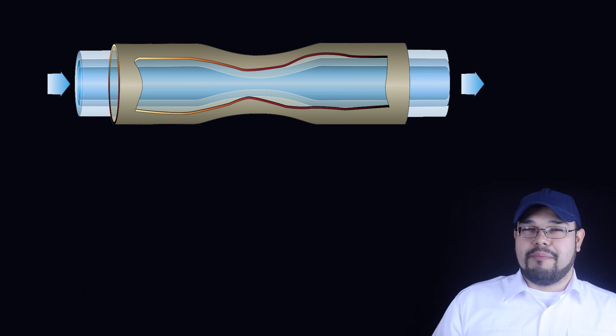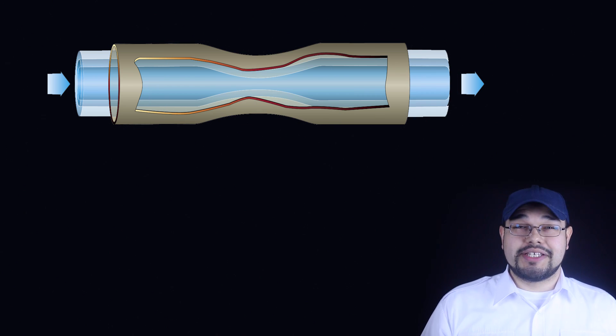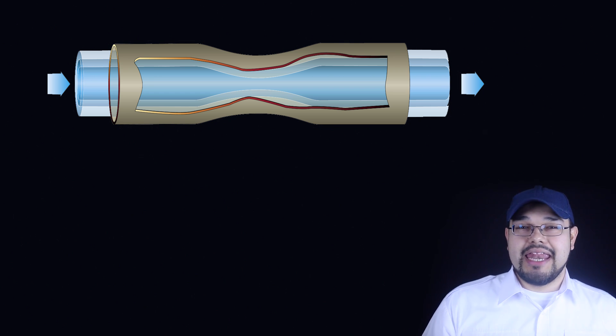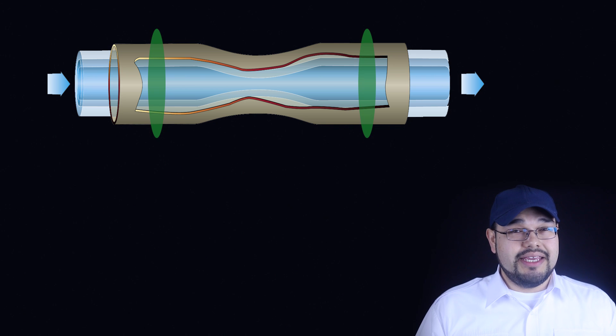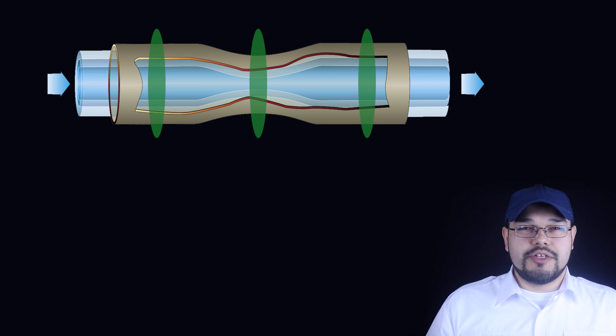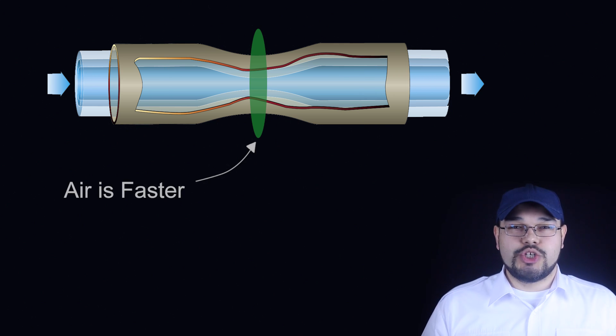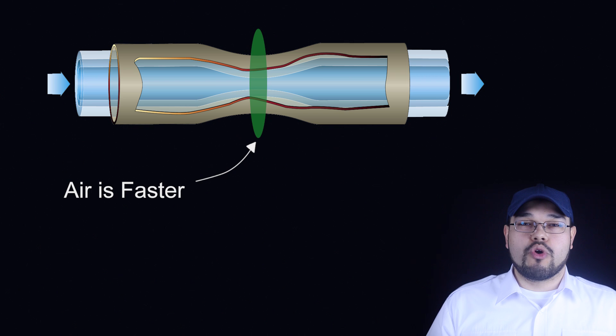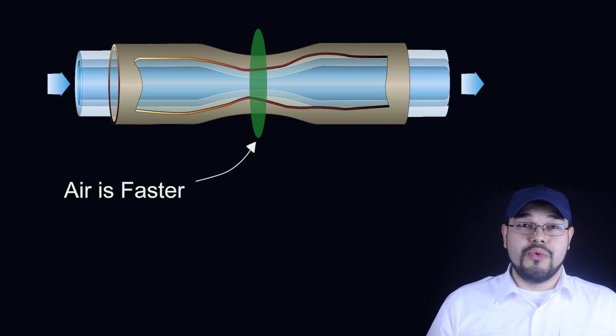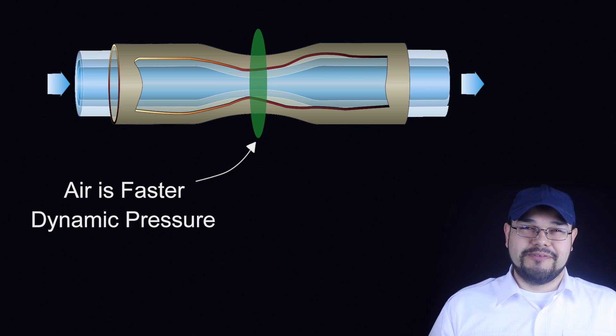Now let's squeeze the middle of the pipe. Well guess what? Still at every cross section in the pipe, we have the same amount of air passing through it at any moment in time. Same amount of air passing through here, as here, and same amount even here. So for there to be the same amount of air passing through here in a moment in time, the air must be and is traveling faster, which means more energy associated with motion, which is dynamic pressure. So yeah, more dynamic pressure at this point in the pipe.